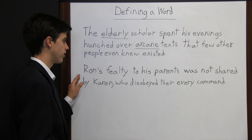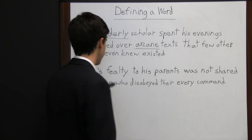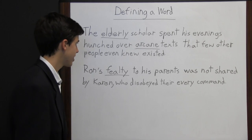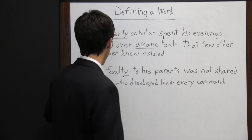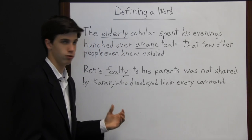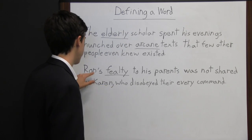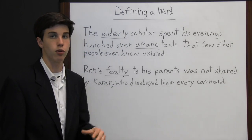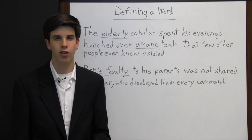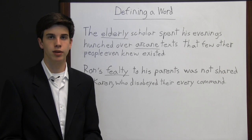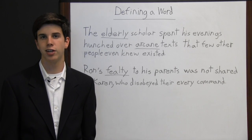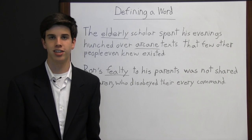The next sentence says: 'Ron's fealty to his parents was not shared by Karen, who disobeyed their every command.' There aren't many words telling us the definition of fealty directly; instead, we see what fealty is not. Karen disobeyed their every command, and Ron is contrasted with Karen. So if fealty is not disobeying, then fealty must mean obeying or being faithful to. Determining the definition of a word based on context is much quicker than consulting a dictionary or a thesaurus.